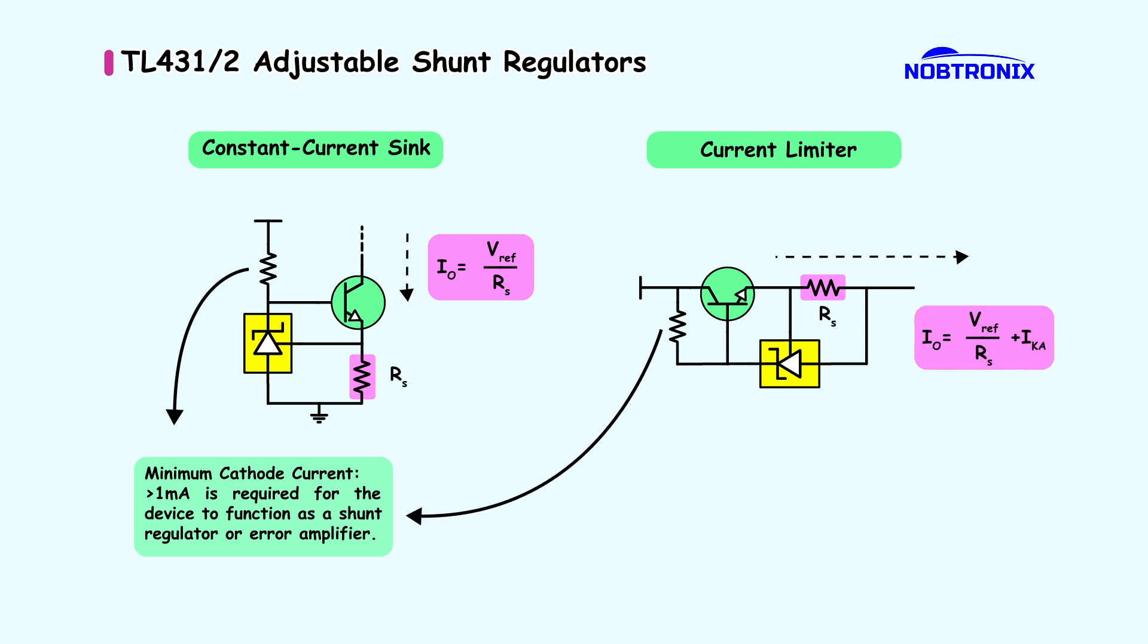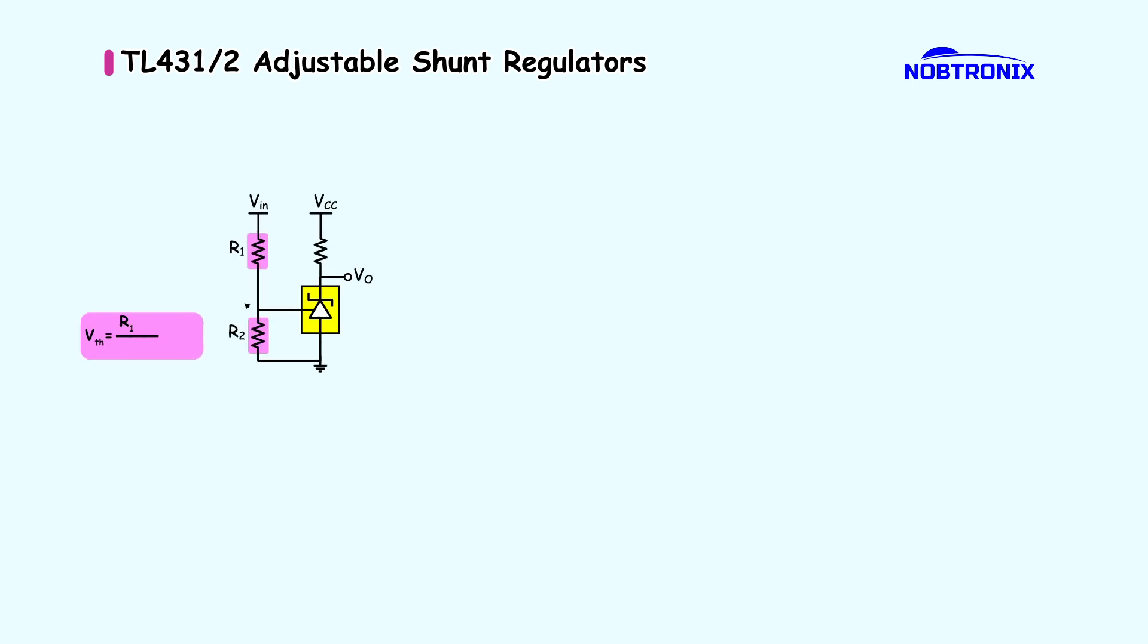In an open-loop configuration, the TL431 works as a voltage comparator. If the input voltage on the ref pin is below the reference voltage, the transistor remains off, producing a logic high. Otherwise, it conducts, producing a logic low.